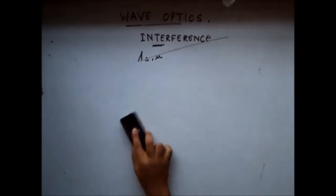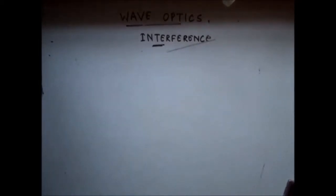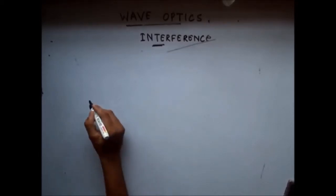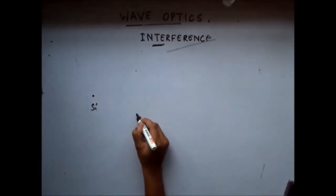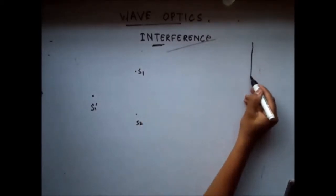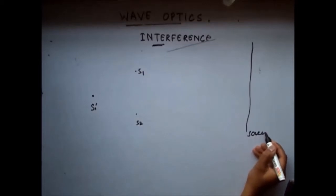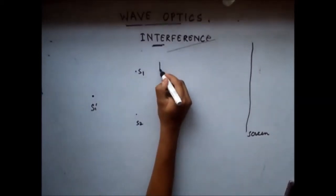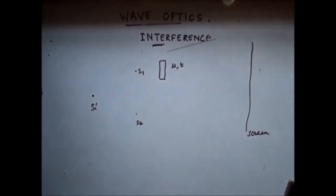In Young's double slit experiment, we have a source and then we have an opaque screen with two slits, S1 and S2, and we have a screen. Now, let's say that I insert a thin glass slab here with refractive index mu and thickness T. Then what happens? Let's find out.